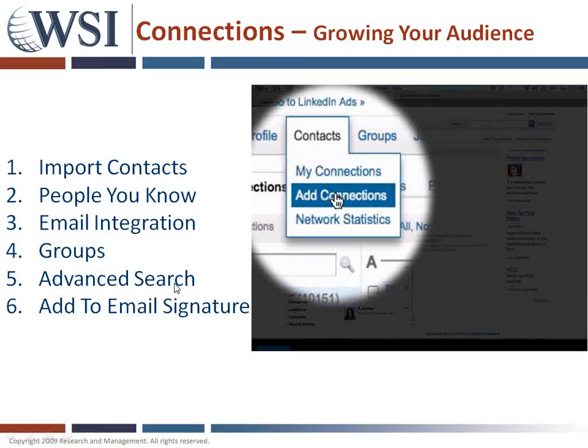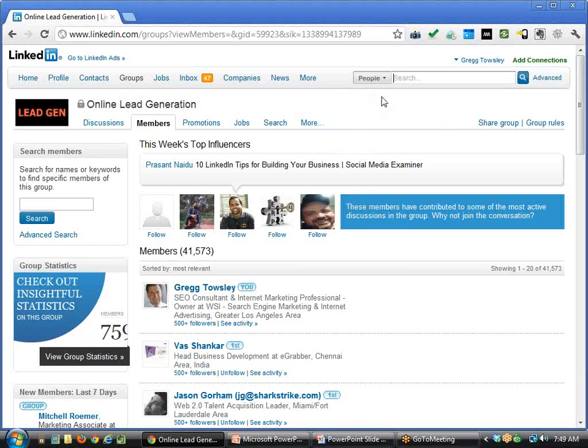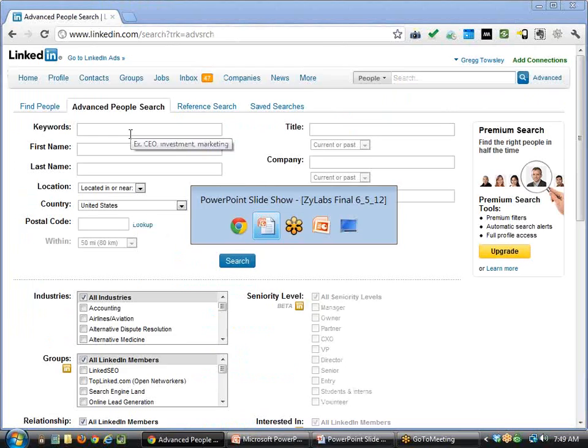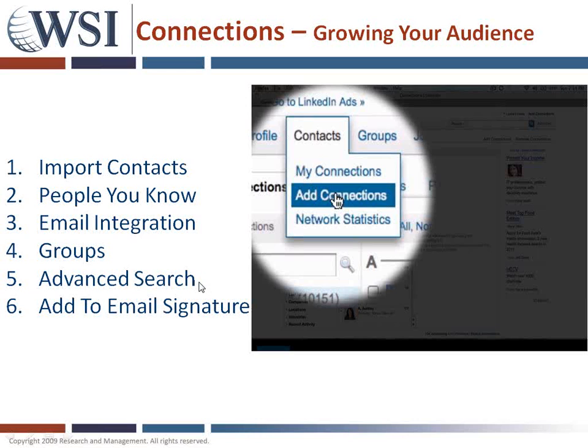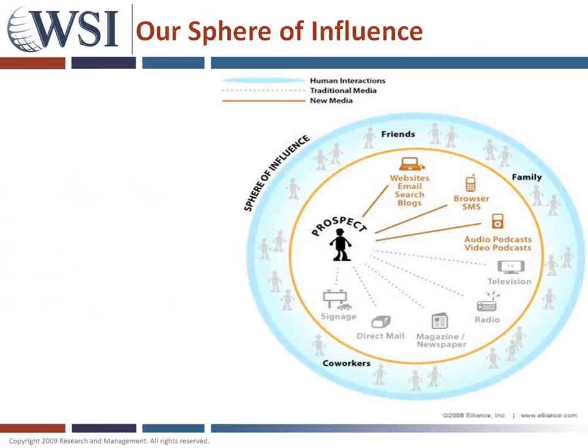Advanced search is another technique, which we'll discuss more in the prospecting section — that's simply searching for people within an advanced search. The last technique is adding your LinkedIn profile to your email signature, which gives people the ability to connect. There are many other ways to grow your connections, but these are the top six we've identified.